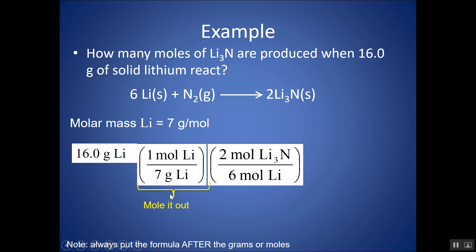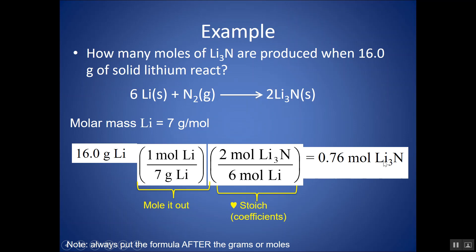Now I can use the coefficients to convert moles of lithium into moles of Li₃N. I want moles of lithium on the bottom so they cancel, and moles of Li₃N on top. The question asks for moles of Li₃N, so I can stop there. Multiplying everything on top and dividing by the bottom, I get 0.76 moles of lithium nitrate. The stoichiometry step uses the coefficients; be very specific about your unit because we're changing substances.